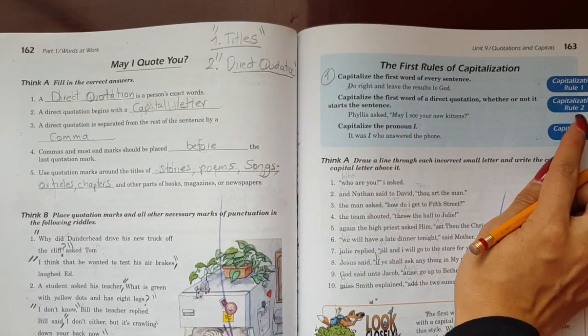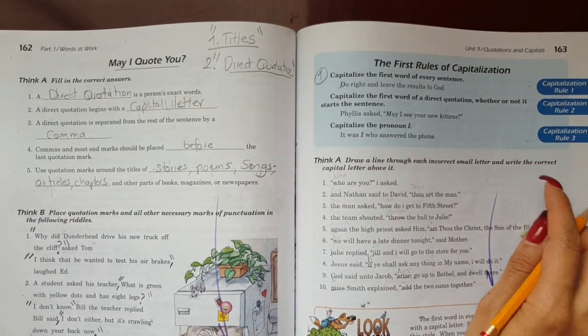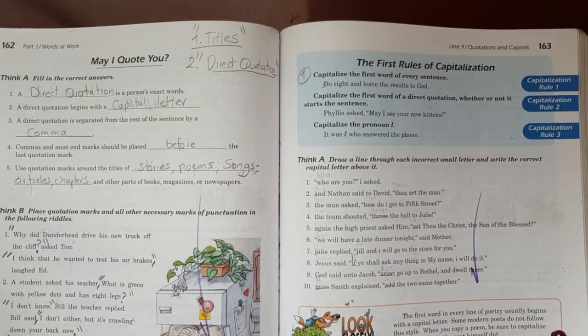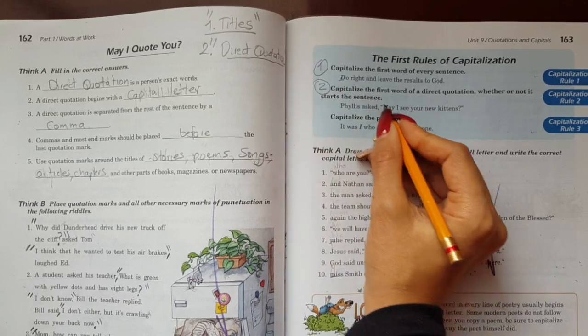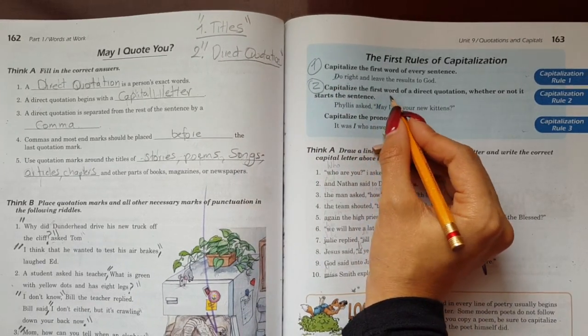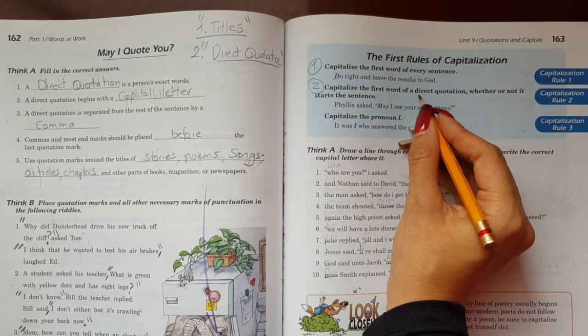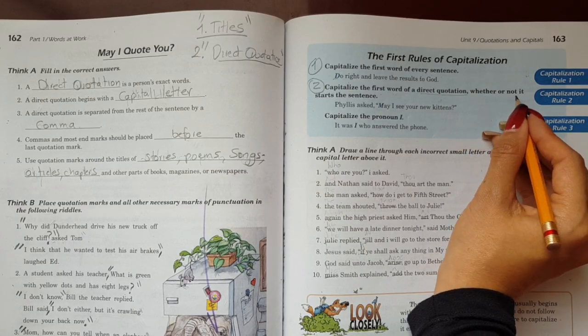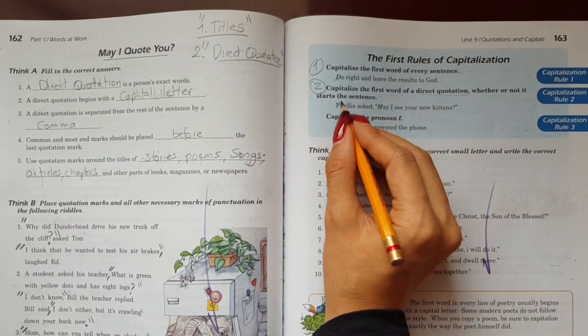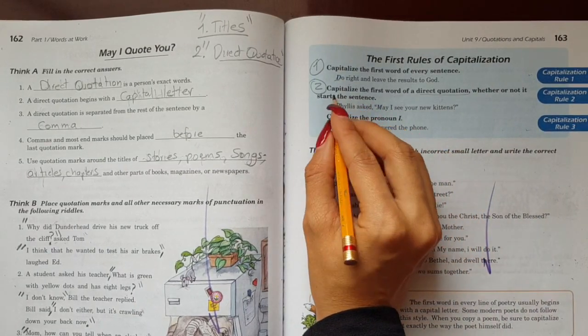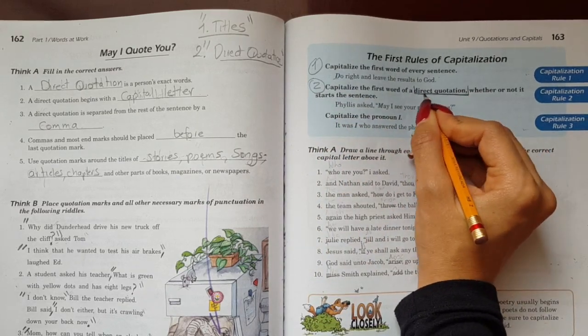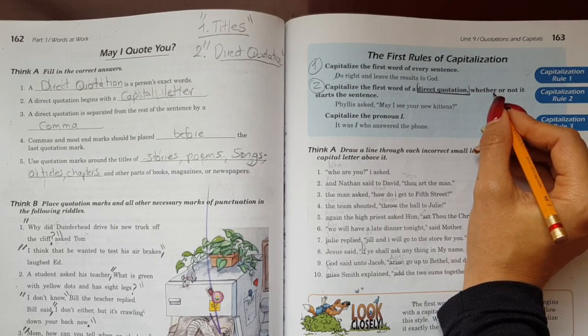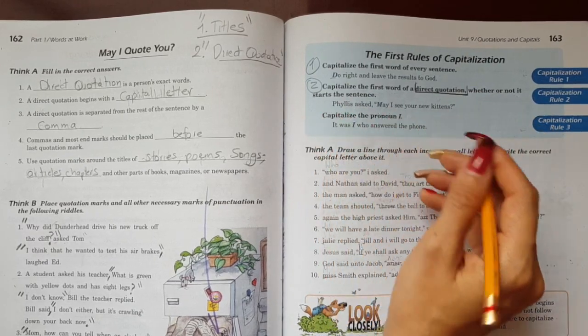Now let's move to the next one, rule number two. I'm going to move the book just a little bit. Rule number two says capitalize the first word of a direct quotation, whether or not it starts the sentence. Put in capital the first word of the direct quotation, regardless of whether it's at the beginning of the sentence.